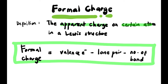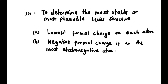Formal charge is the apparent charge on certain atoms in a Lewis structure. To calculate it: Formal Charge = Valence Electrons − Lone Pair Electrons − Number of Bonds. Formal charge is used to determine the most stable or most plausible Lewis structure. The most plausible structure has the lowest formal charge on each atom, and the negative charge should be on the most electronegative atom.